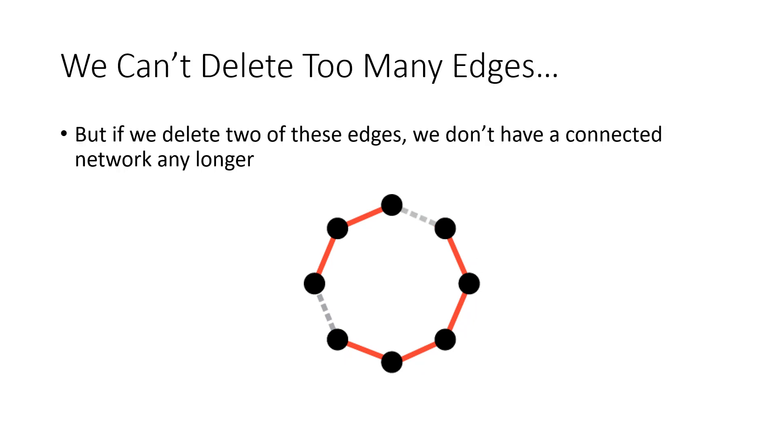However, if I eliminate two edges out of my circuit, well, now my graph has become disconnected. Now there's a break where I can get between these three vertices and I can get between these five vertices, but I can't get from one side to the other. So if I get rid of too many edges, then I don't have a connected graph.